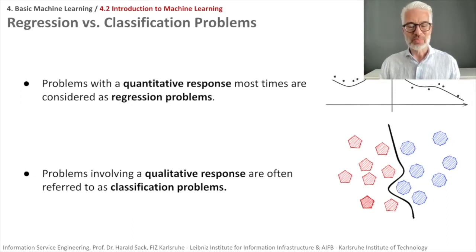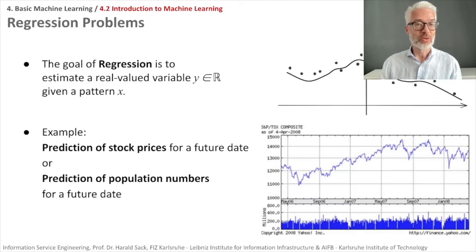The goal of regression is to estimate a real-valued variable y given a pattern x. For example, prediction of stock prices for a future date using time series data, prediction of population numbers for a future date, or in climate change, predicting whether the temperature is rising and how high it will be, say, in 20 years. This exactly would be a regression problem.